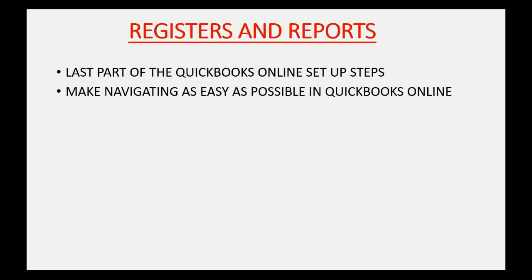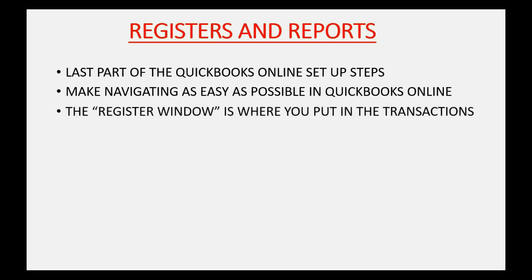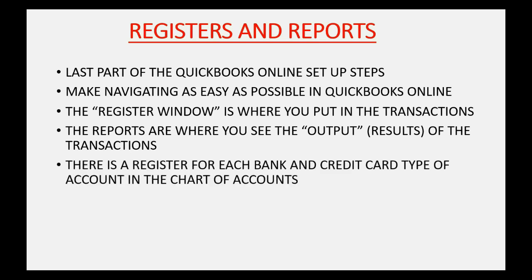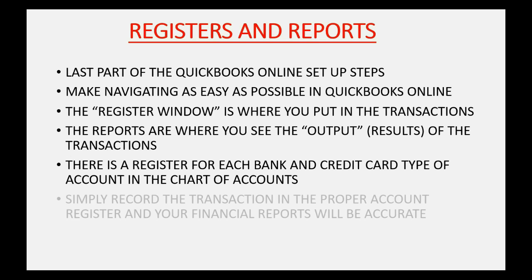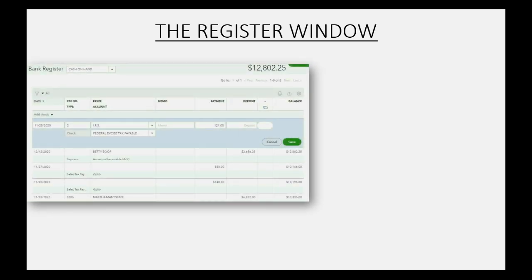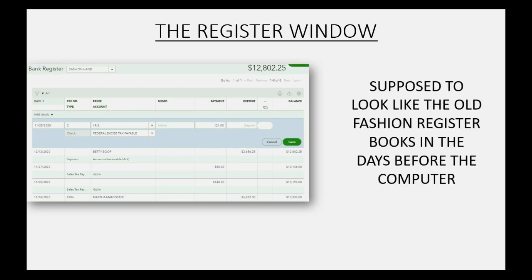These two windows will make navigating QuickBooks Online as easy as possible. The register window is where you will put in the transactions, and the reports is where you will see the result or the output of the transactions. There is a register window for each bank and credit card type of account in the chart of accounts. The register window looks like something that your grandparents used to carry around — it's a window that's supposed to look like the old-fashioned register books from the days before the computer.